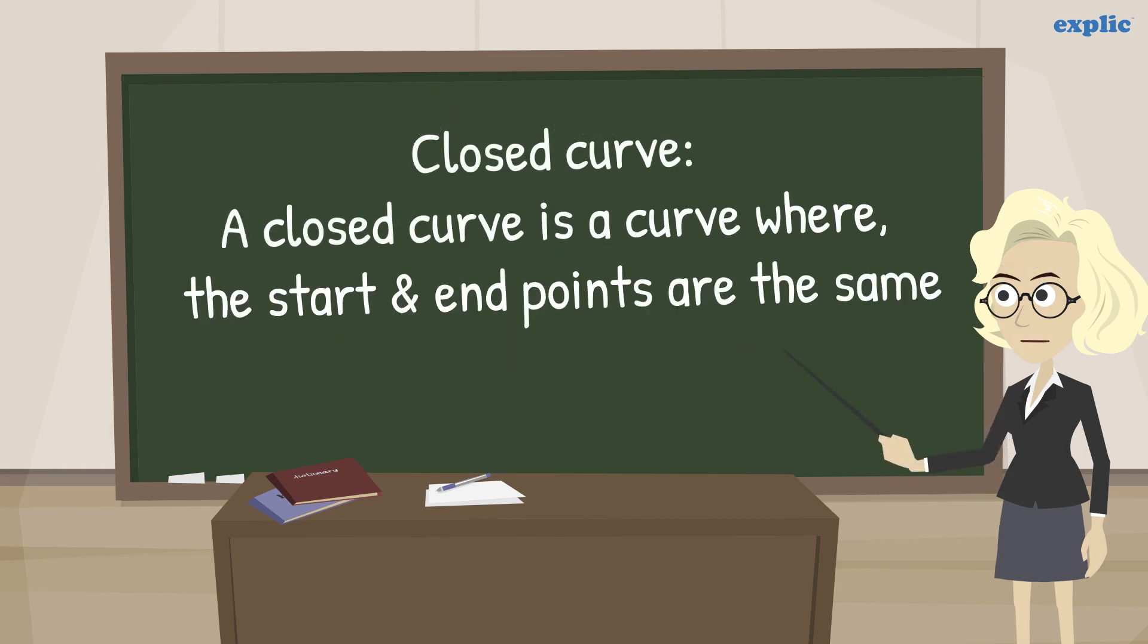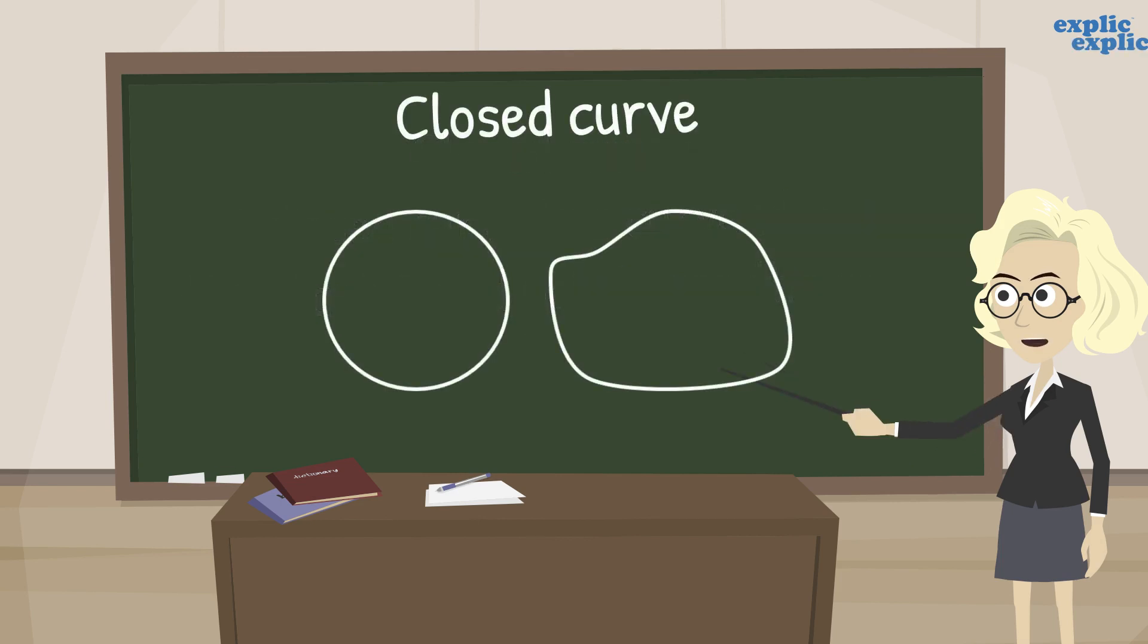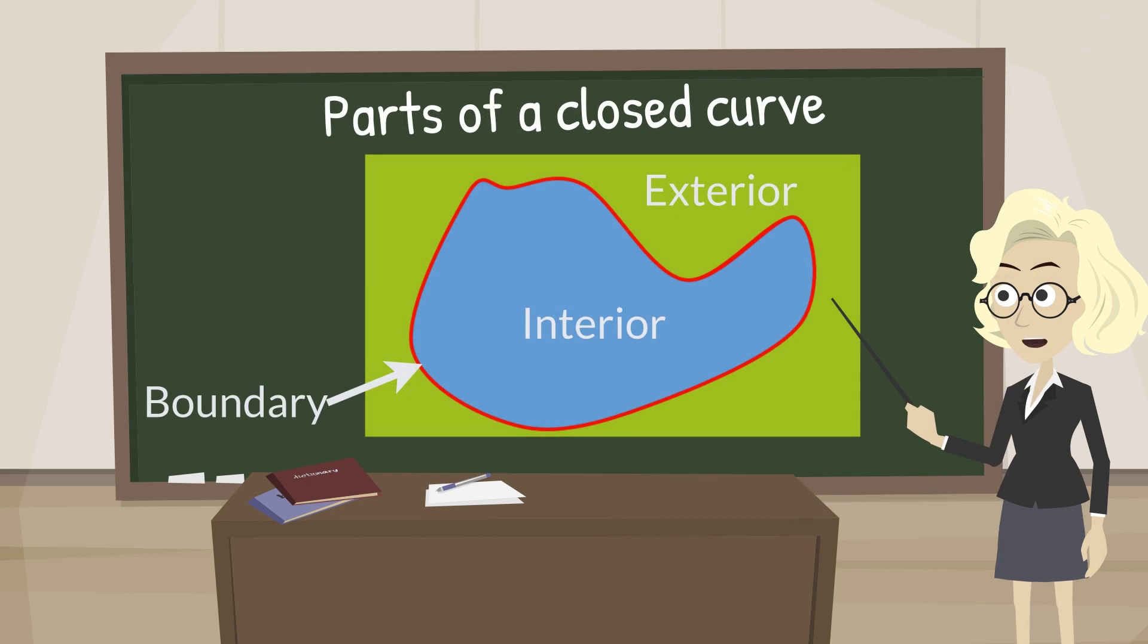A closed curve is a curve where the start and end points are the same. A closed curve is an enclosed area. The inside part of a closed curve is the interior, the outside part is the exterior, and the curve line is called the boundary of the curve.